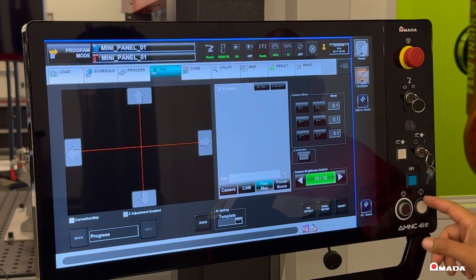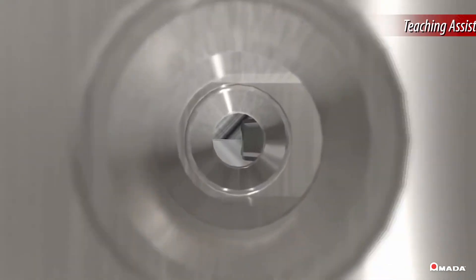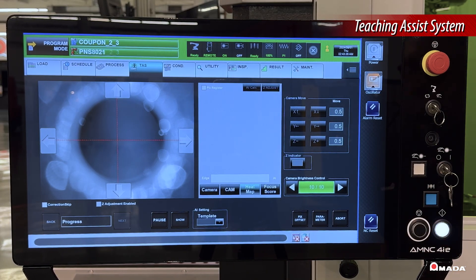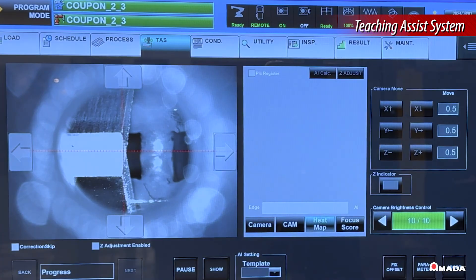The control is also equipped with an AI teaching assist system, or AI TAS. This feature compensates for any robot deviation from the target weld path and ensures consistent welds from part to part.